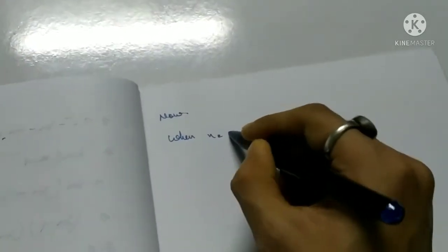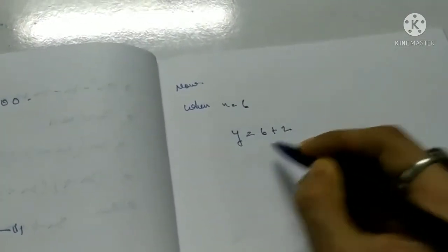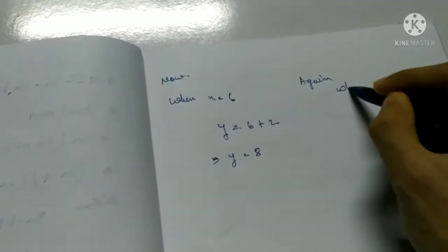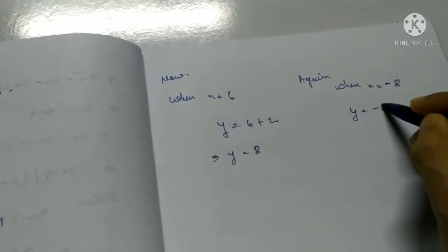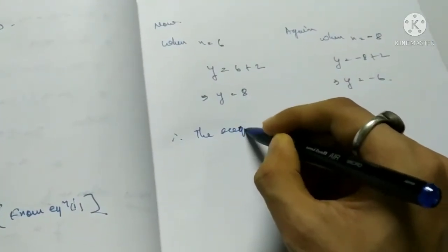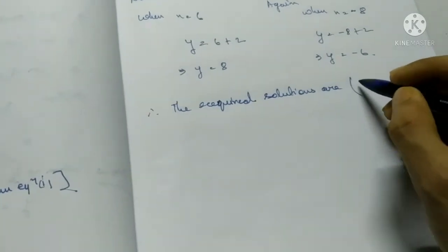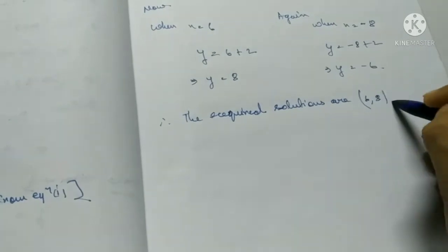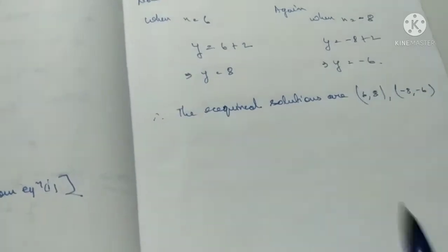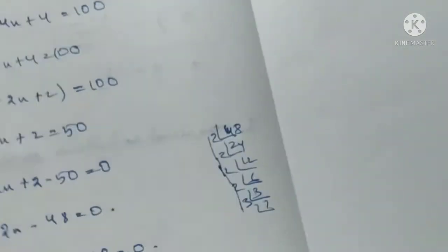When x equals 6, y equals 6 plus 2 equals 8. When x equals minus 8, y equals minus 8 plus 2 equals minus 6. Therefore the required solutions are (6, 8) and (minus 8, minus 6). Checking the back answer: 6, 8 and minus 8, minus 6 — correct.